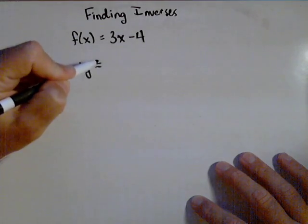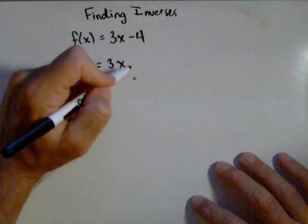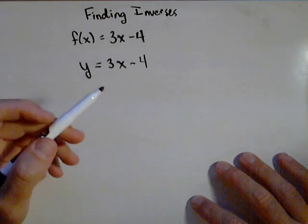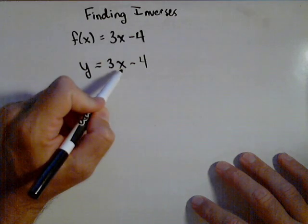So, instead of writing f of x, I'm going to write y equals 3x minus 4. Sometimes you'll hear the technique of swapping the variables and solving for y. I don't do that because your variables might have meaning. All we need to do is solve for x.